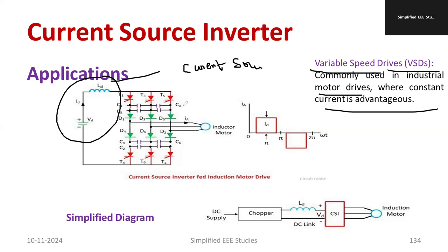You are using the switching devices and they feed to the induction motor. Output waveform will be square. For better understanding, we can see the DC source, then chopper. Later you are producing current source. We have a DC link and DC link capacitor. You are utilizing current source inverter, then supply to induction motor.